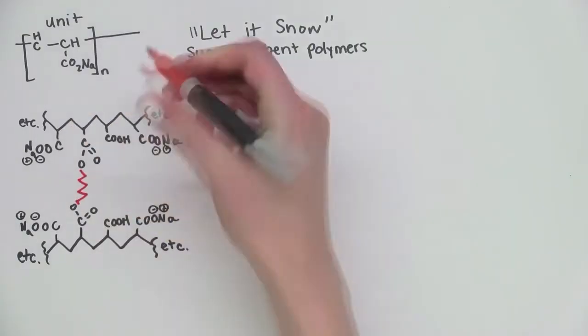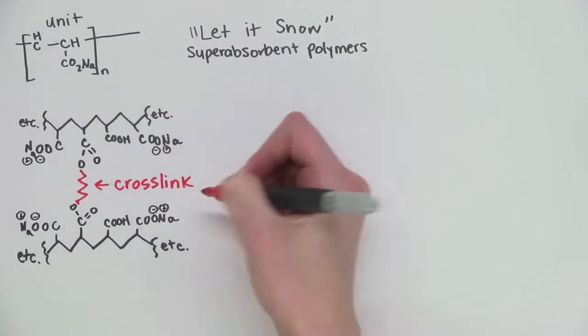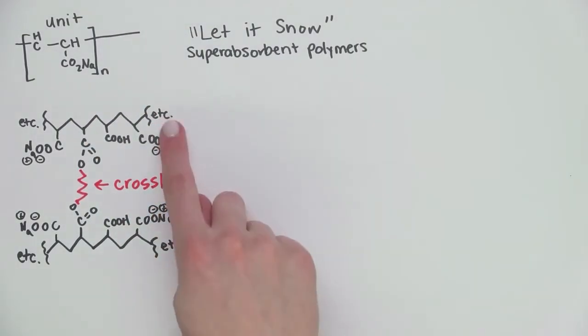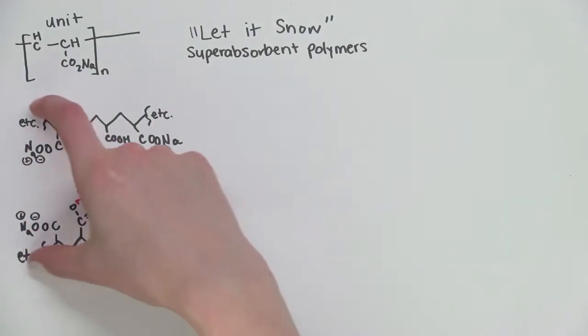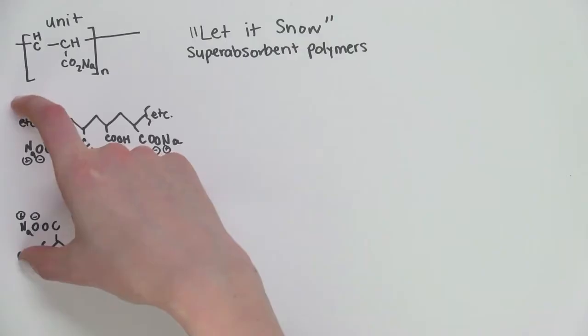Now, different chains are held together by cross-links. The et cetera just means that this could be thousands of carbons long. This is just a small part of the chain in the polymer.